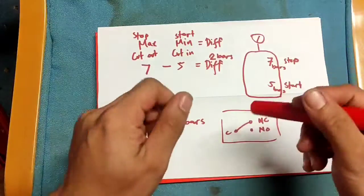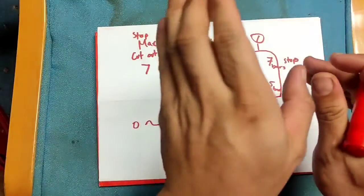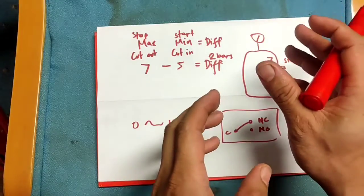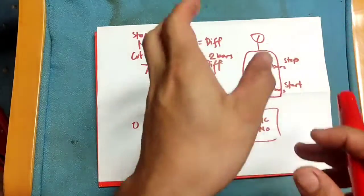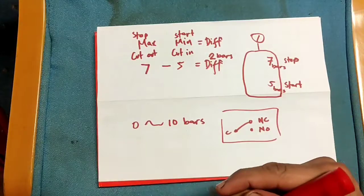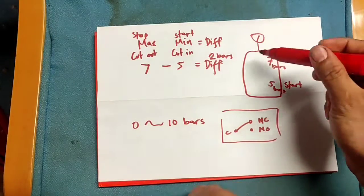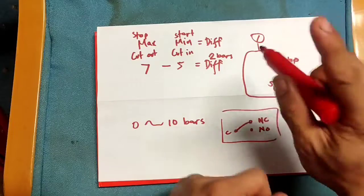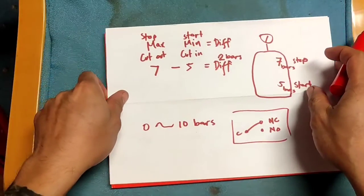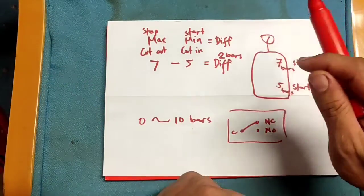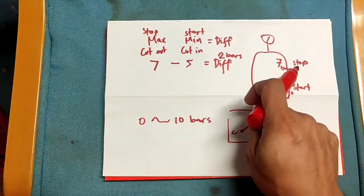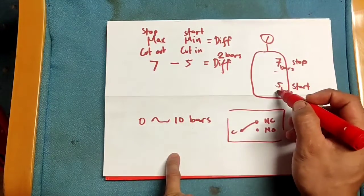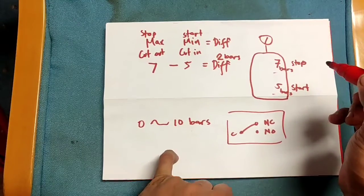Some other designs have a separate pressure switch for cut-in and a separate one for cut-out, or stop and start. But here, with the differential pressure switch, only one pressure switch is needed. For example: stop at 7 bars, start at 5 bars.